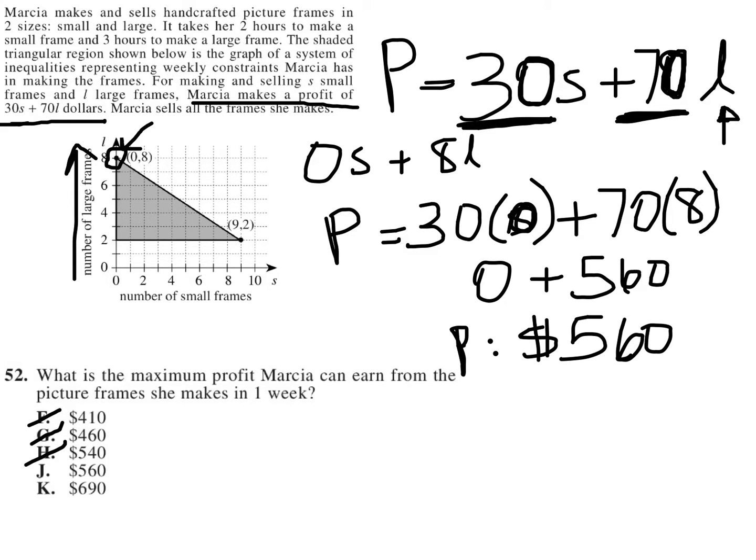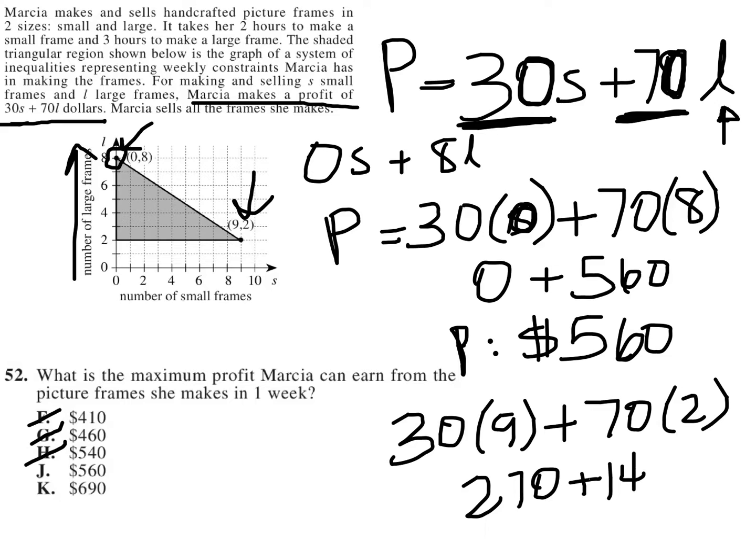So even if we were to look at, for instance, this point here, where she makes 9 small frames and 2 large frames, it just won't be enough. So I'll show you. 30 times 9 plus 70 times 2, I get 270 plus 140, which equals 410.